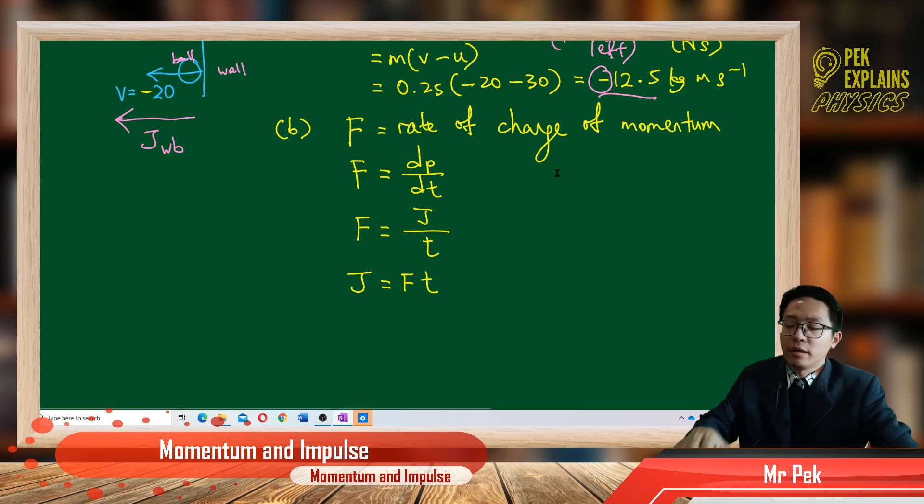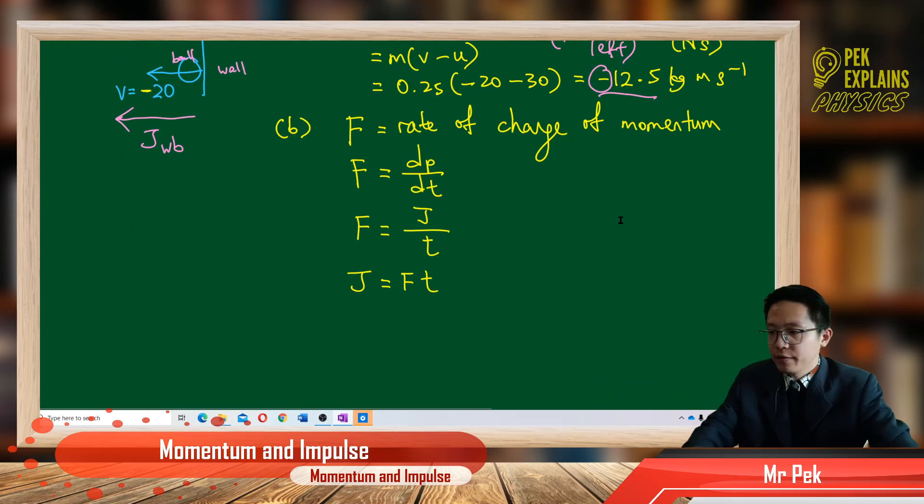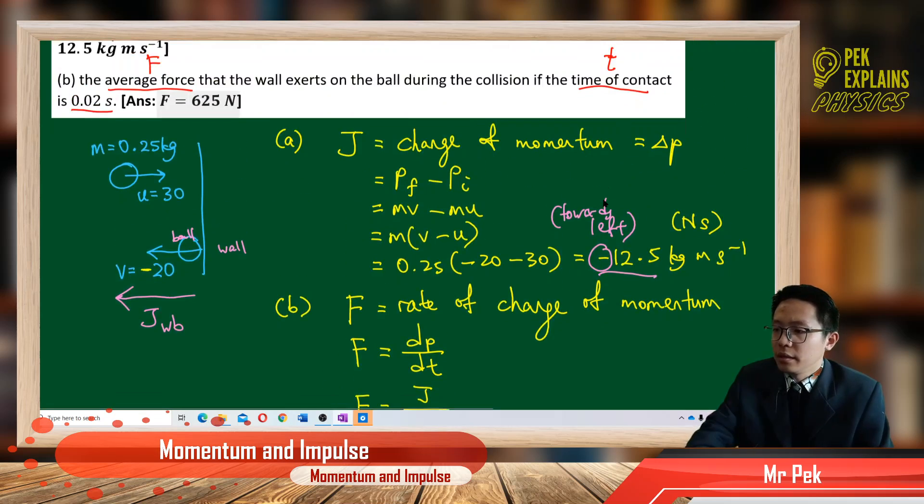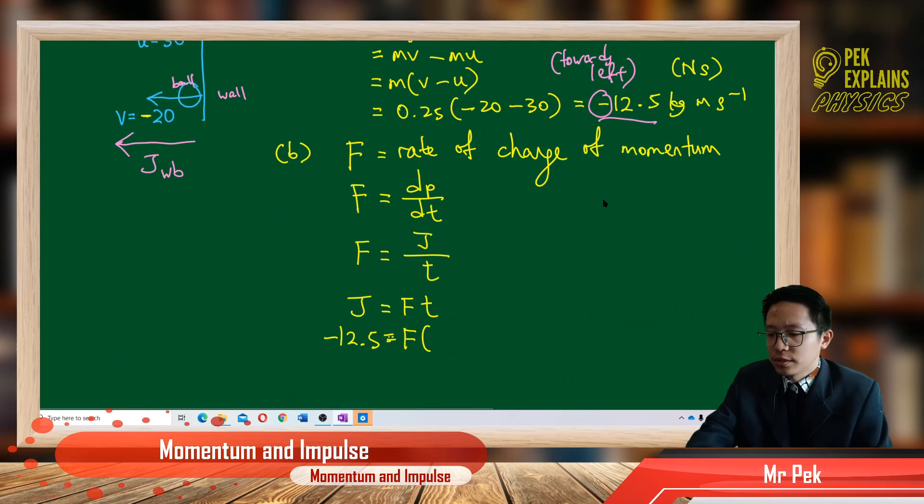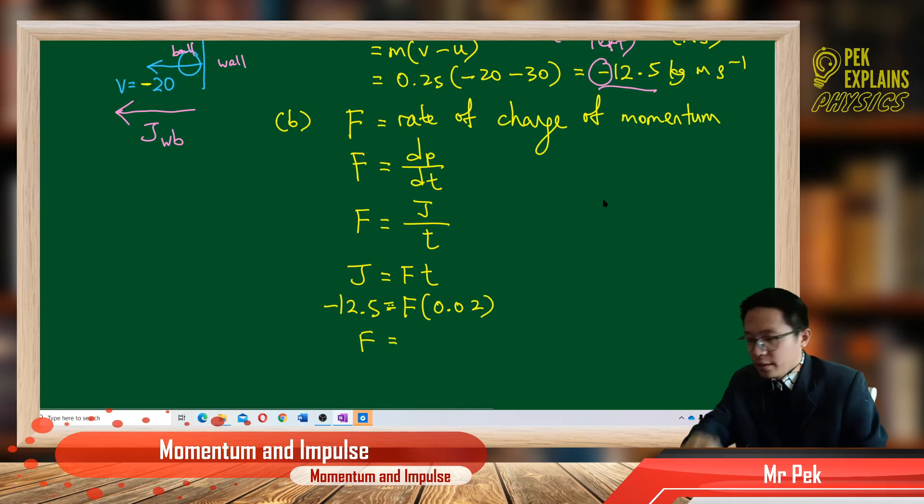So we already got the impulse just now, negative 12.5. So we just substitute inside the information. So we have negative 12.5, F times the time taken is 0.02 second. So just substitute the 0.02. And then we will have our impulsive force, which is negative 625 newton.